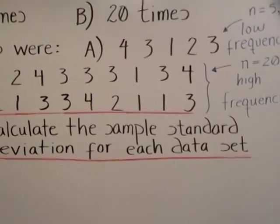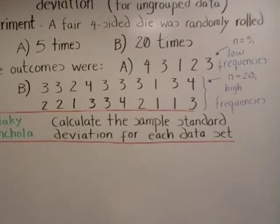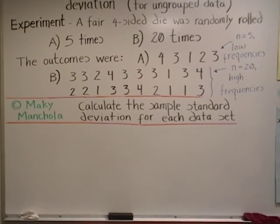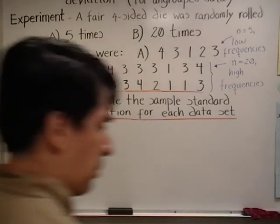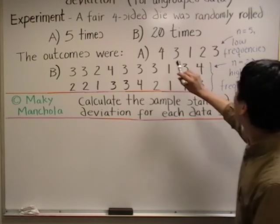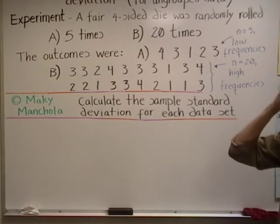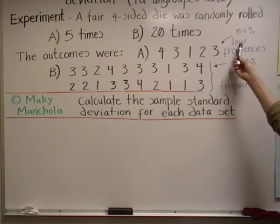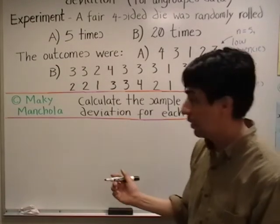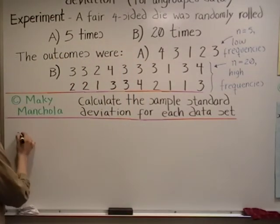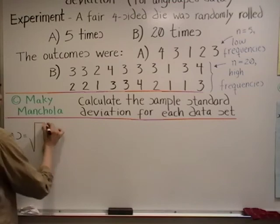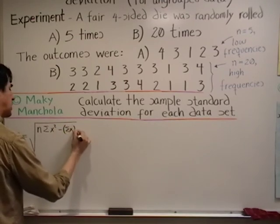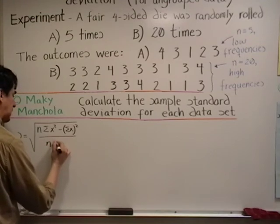Now let's work out our examples. We will calculate the standard deviation for both data sets. For data set A, notice that we only have the data — we don't have x-bar. So we will use the formula for sample standard deviation that does not use x-bar. Also note that the frequencies are low, so we will use the formula that does not employ frequencies. The formula is: the square root of n times the sum of x squared minus the quantity (sum of x) squared, all over n times n minus one.